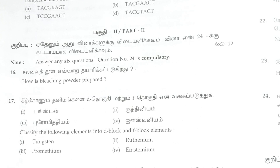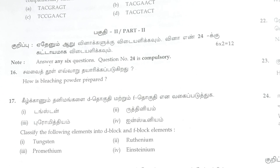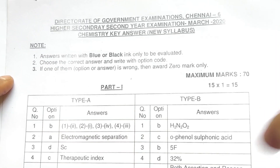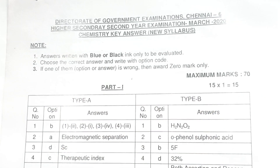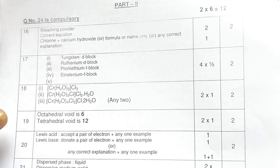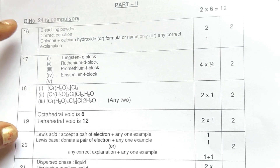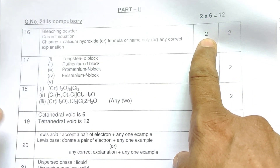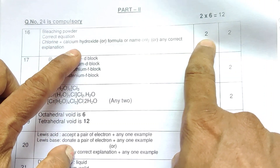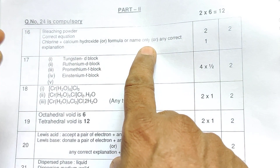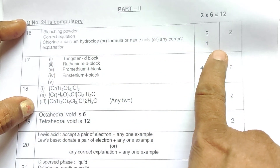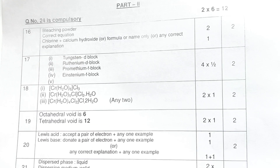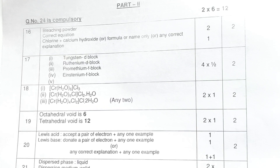Two marks: first question — how is bleaching powder prepared? This is a one-mark key. For Type A and Type B, we have two marks. If you have the correct equation — Chlorine reacting with Calcium Hydroxide with the correct formula — that is two marks. The correct equation gives you the full two marks.